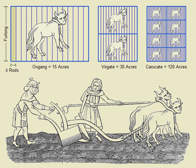The customary acre was a measure of roughly similar size to the acre described above, but it was subject to considerable local variation similar to the variation found in karakates, vergates, bovates, nooks, and farandals. However, there were more ancient measures that were also farthingales. These may have been multiples of the customary acre, rather than the statute acre.